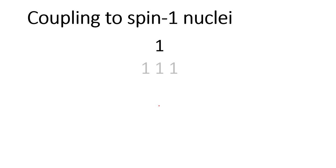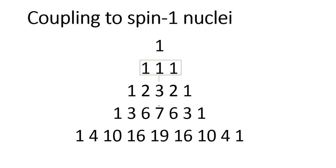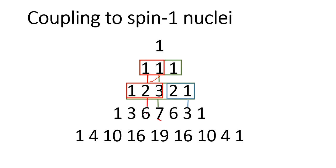For spin I=1 nuclei like deuterium, the splitting pattern is different. For one deuterium the pattern is 1:1:1; for two deuteriums the pattern becomes 1:2:3:2:1, giving 5 peaks. The numbers are derived by summing adjacent values from the previous row in a similar triangular pattern.